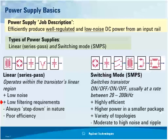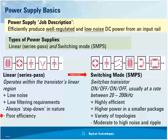Linear power supplies are only step-down in nature — you can't take a given input voltage and step it up. But the biggest drawback is they're very inefficient. They're also more expensive, heavy, and can generate a lot of wasted heat. Most products today have switching power supplies, often called switch mode power supplies or SMPS. The basic theory is they switch on and off, typically at a rate of 20 to 200 kilohertz, sometimes higher.